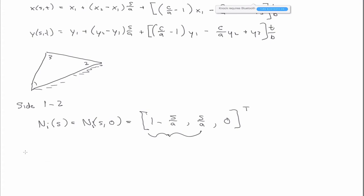So, in general, for a triangle, q_i is going to be the integral over side one to two, N_i S plus the integral over side two to three, plus the integral three, one, N_i.